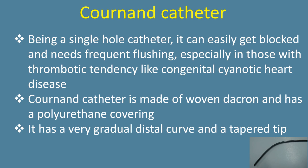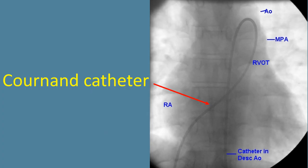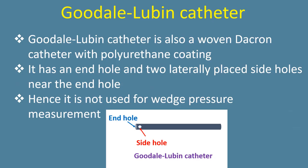The Cournand catheter is made of woven dacron and has a polyurethane covering. It has a very gradual distal curve and a tapered tip. A fluoroscopic view shows the Cournand catheter passing from the inferior vena cava to the right atrium, right ventricle, pulmonary artery, and across a patent ductus arteriosus into the descending aorta.